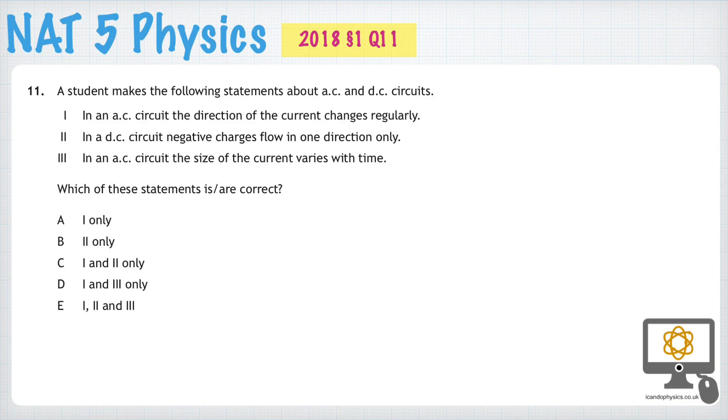Question 11 from the National 5 Physics paper from 2018 assesses our understanding of the difference between AC, which is alternating current, and DC, which is direct current circuits. So let's go through each of these statements and see if they're correct or not.